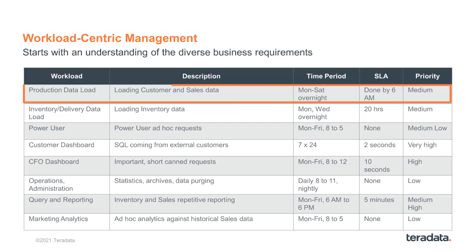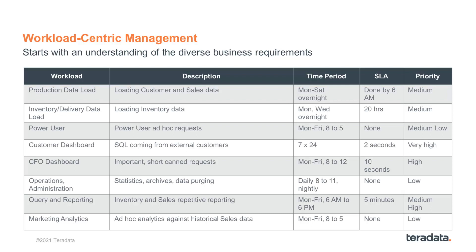For example, on this chart, we have our production data load. We make a note of when it's going to run — it's a night job — and whether it has an SLA or not. And then its relative priority compared to the other active work on the platform. So we go through all the different types of work, noting its relative priority and any SLAs.